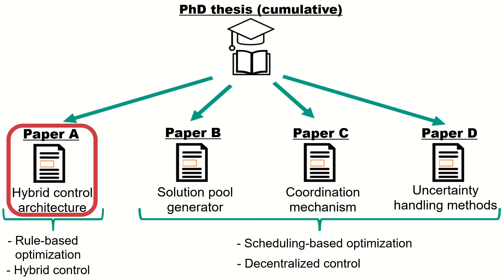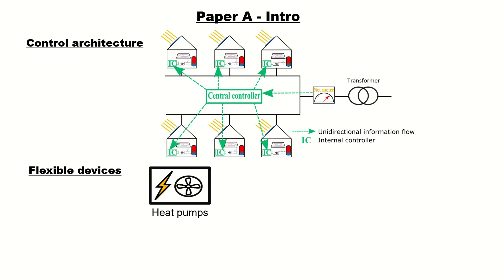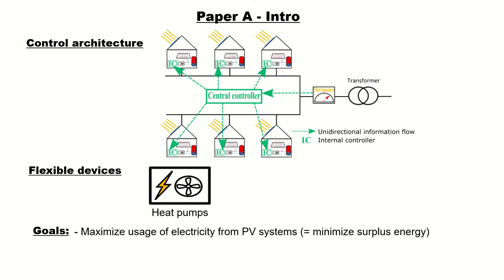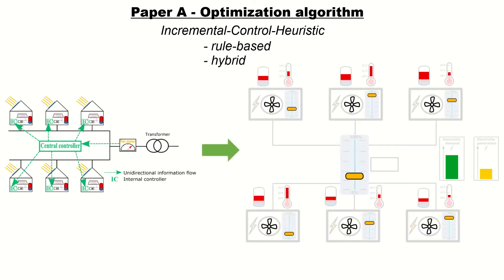Let's have a closer look at paper A with a hybrid control architecture. We have a centralized control unit that sends control advice to the internal controllers of the buildings, and the internal controllers then decide what to do with it without giving any feedback to the centralized control unit. We also have a net meter that measures whether we have more generation or demand in the local grid. The flexible devices are heat pumps in the buildings, and the goal is to maximize the usage of electricity from solar systems. The optimization algorithm is called the incremental control heuristic — a rule-based and hybrid control approach.